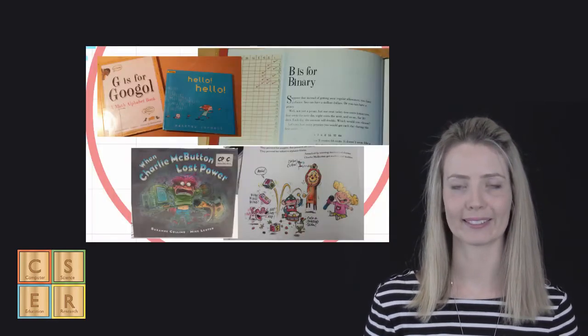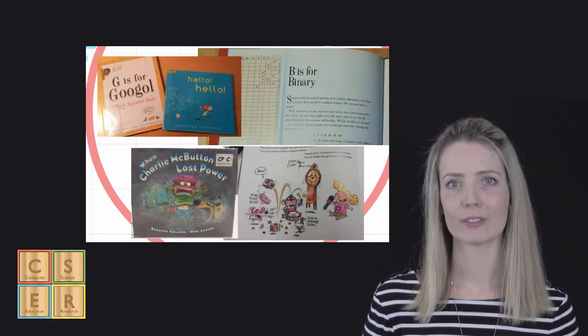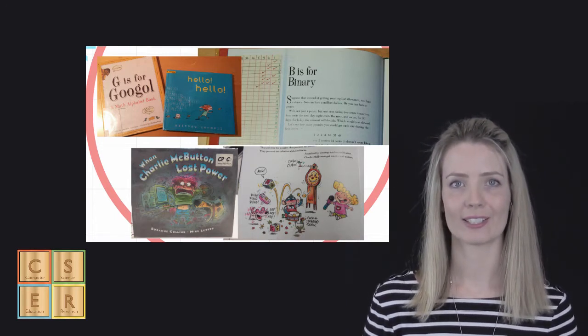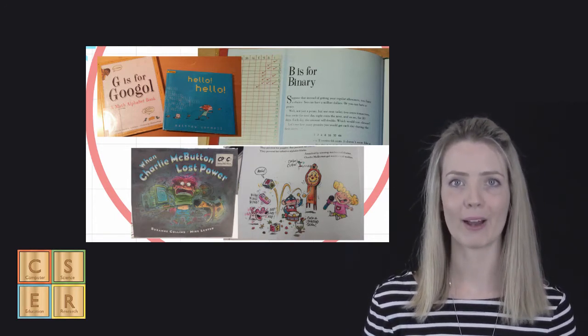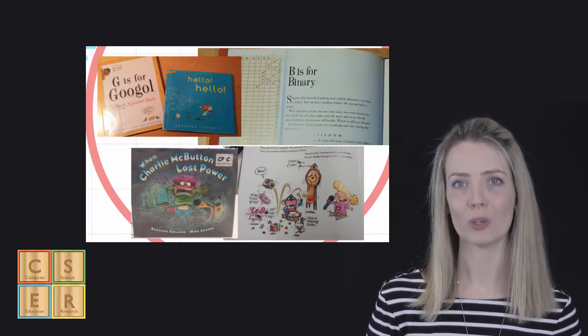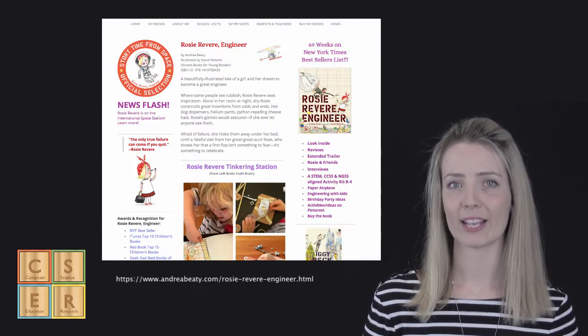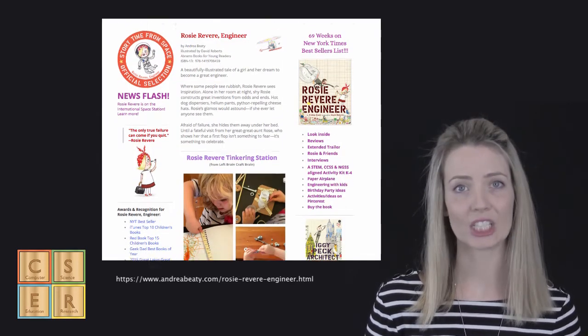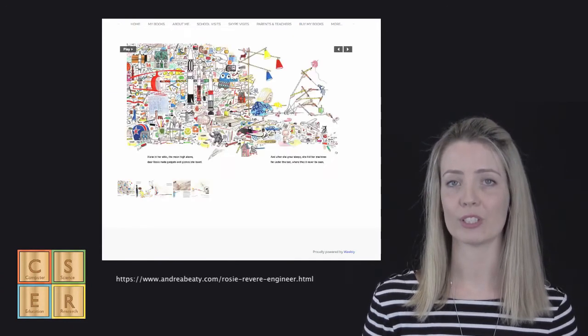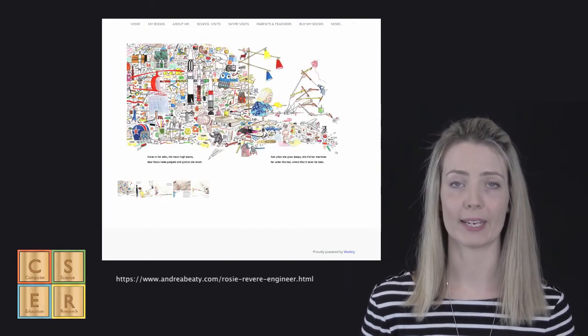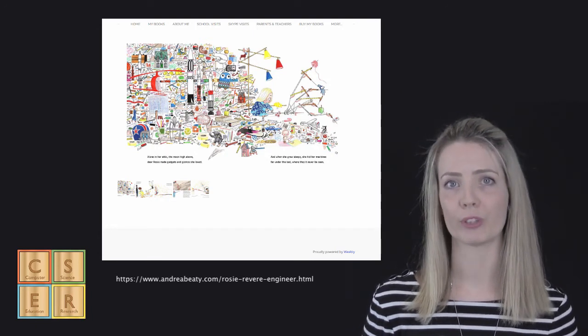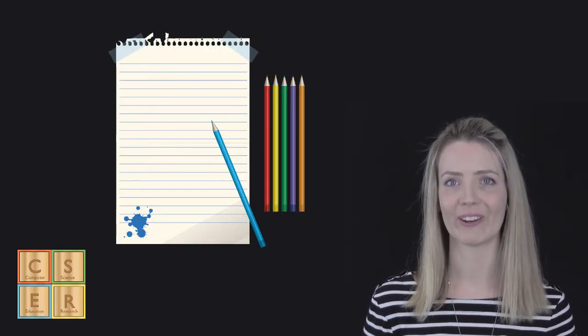There are a number of books that can be a great way to introduce a digital technologies lesson or topic in a classroom activity. These could be books that support the topics related to digital technologies such as When Charlie McButton Lost Power by Susan Collins or G is for Google by David Schwartz. There are also some fantastic books for exploring innovation and creativity as well as building resilience, for example Rosie Revere series by Andrea Beaty. Alternatively, you could create your own book for the class or have students create their own book about digital technologies topics.